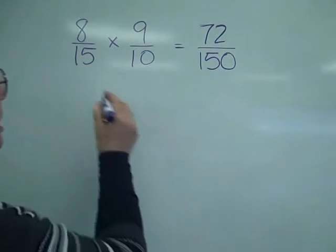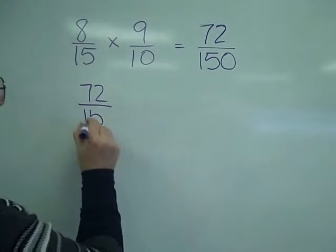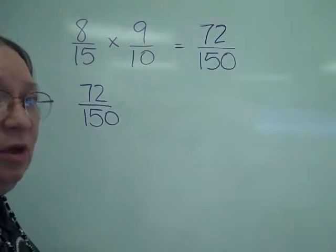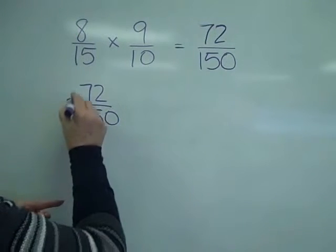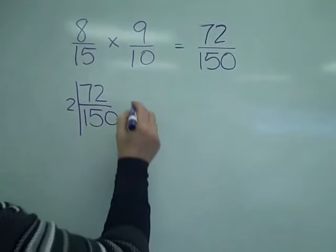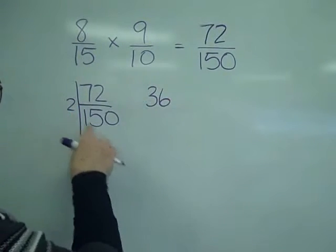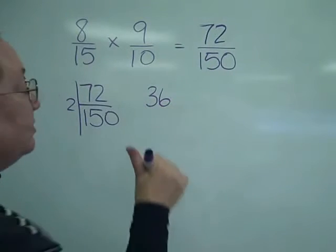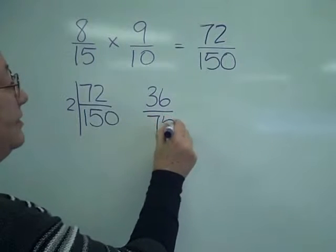So let's look at that 72 over 150. I know that they're both even, which means I'm going to reduce by 2s. So 2 goes into 72 — I know it goes 36 times. 2 goes into 150: think of money — if you split a buck fifty in half, you've got 75 cents.